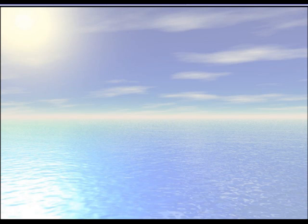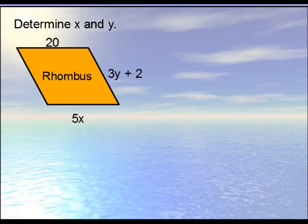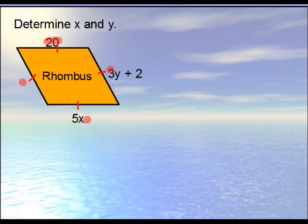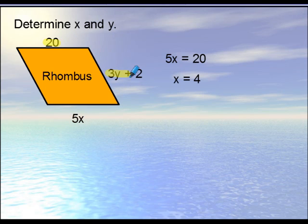One last example: we're told a figure is a rhombus — determine the values of x and y. Since it's a rhombus, it's equilateral, meaning every single side is congruent. You can see the value 20, so all sides equal 20. Therefore 5x equals 20, which means x equals 4. It also means that 3y plus 2 equals 20 — subtract 2 from both sides and divide by 3, giving y equals 6.